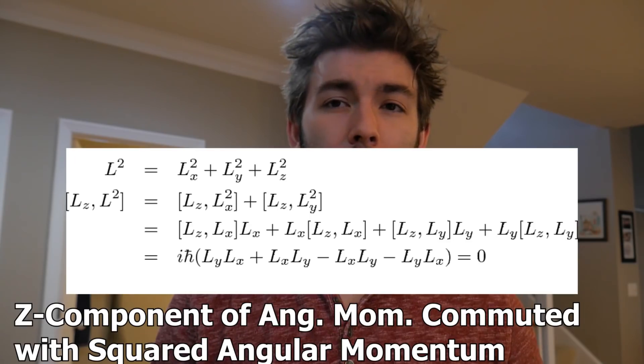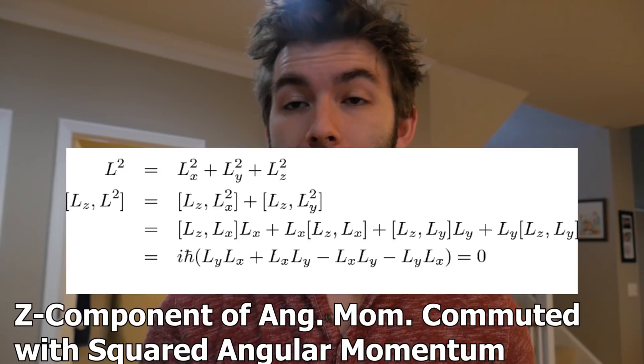A big part of this angular momentum section has to do with what operators don't commute with each other — meaning if you were to take measurements on two quantities at the same time, would you be able to? Certain things you can do, and certain things you can't. For example, you can't measure angular momentum in the x-direction and y-direction simultaneously because they don't commute, so you're faced with finding quantities that do commute and extracting a wave function from that.